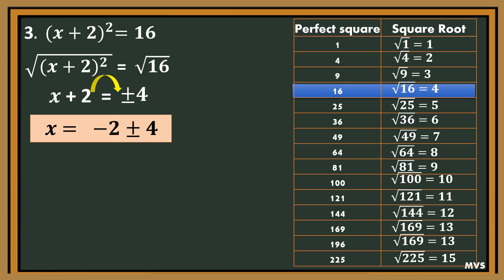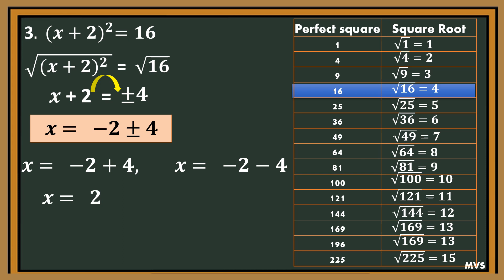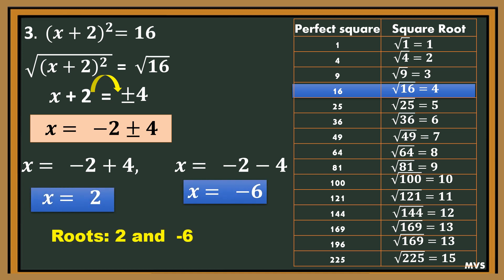Let us separate the two equations. First, x is equal to negative 2 plus 4. Second, x is equal to negative 2 minus 4. The sum of negative 2 and 4 gives x equals 2. How about negative 2 minus 4? x is equal to negative 6. Therefore, the roots of the equation are 2 and negative 6.